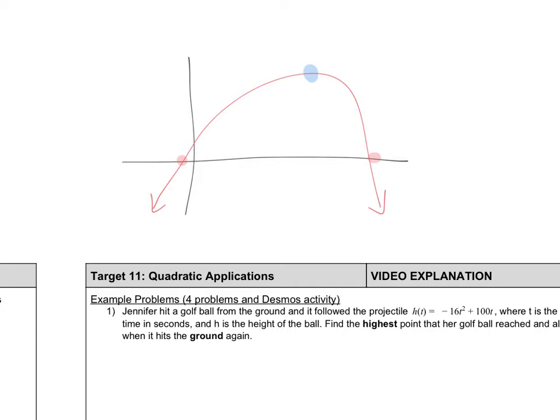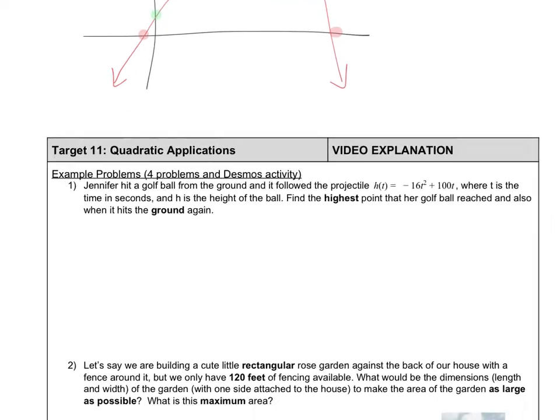And then we can also ask, what was the y-intercept? In standard form, that's just our c-value. Or we could plug in zero for x and see what our y-value is. But with regard to quadratics, those are really the only things that we can ask for. So as long as we know how to find our vertex, our x-intercepts, or our y-intercept, then we can get anything we need.